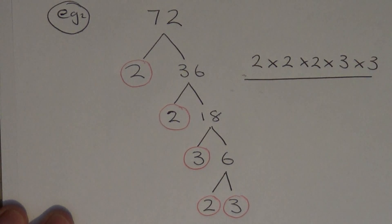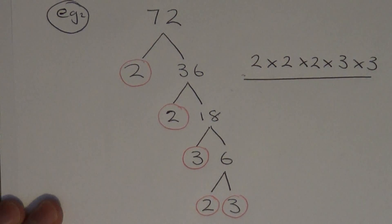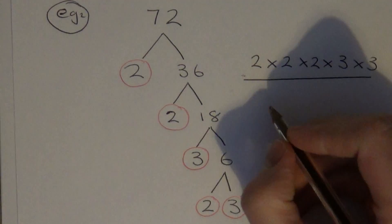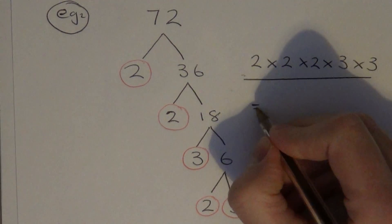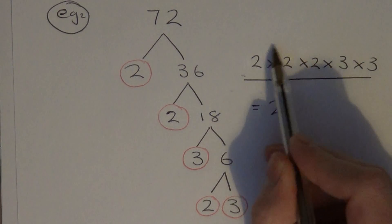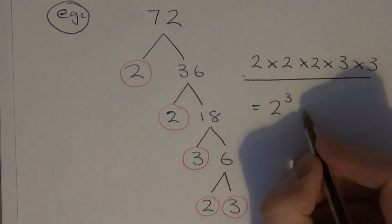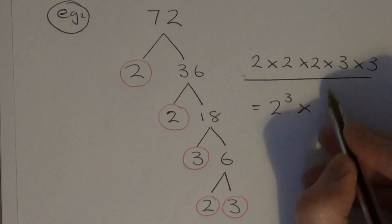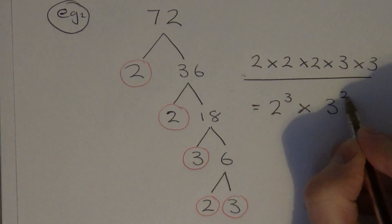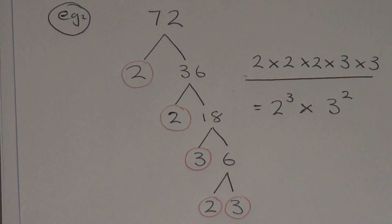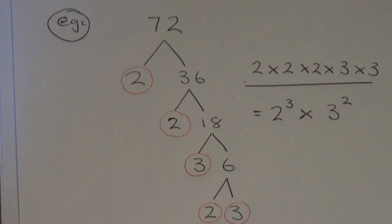That is the product of prime factors. If the question asks you to write the product of prime factors using powers, you can write it down as 2 to the power of 3, because you have three 2's being multiplied, times 3 squared, because there are two 3's being multiplied. And that is the product of prime factors.